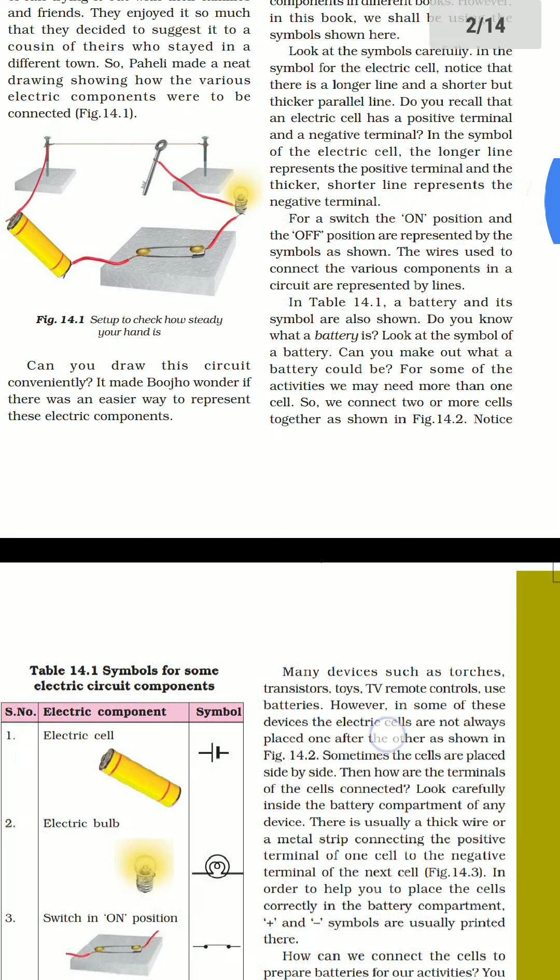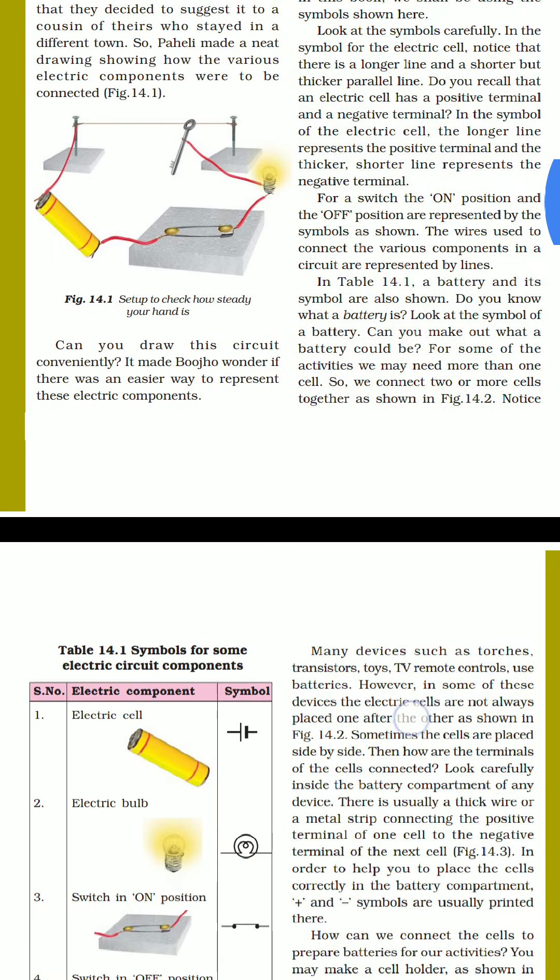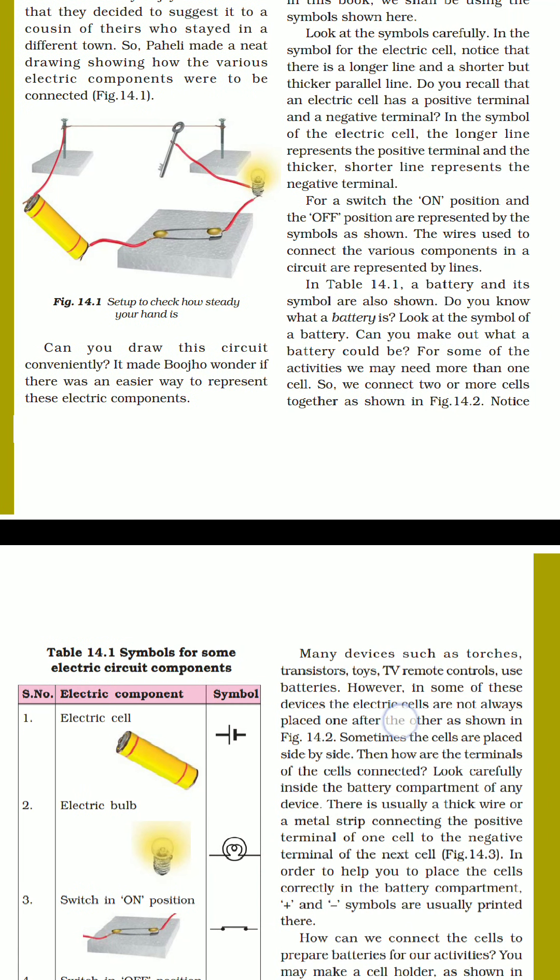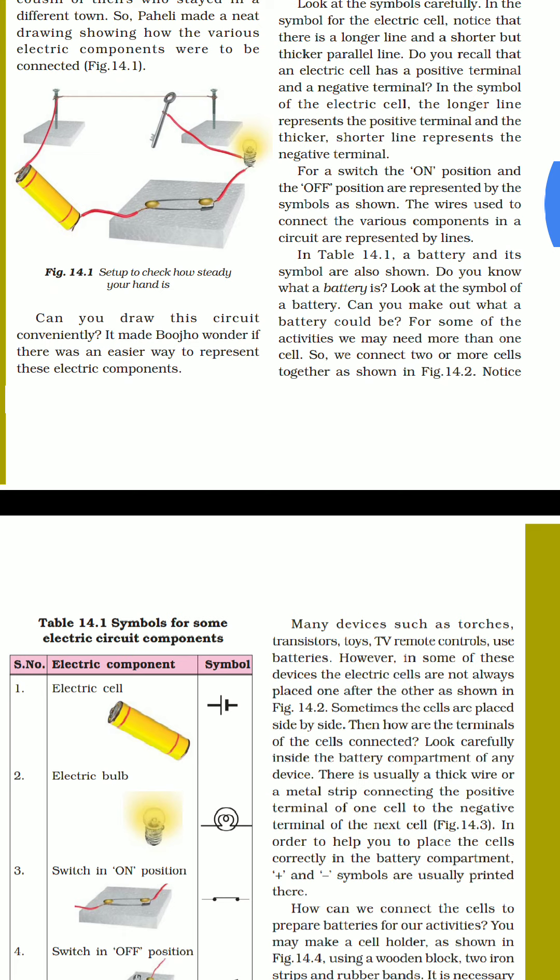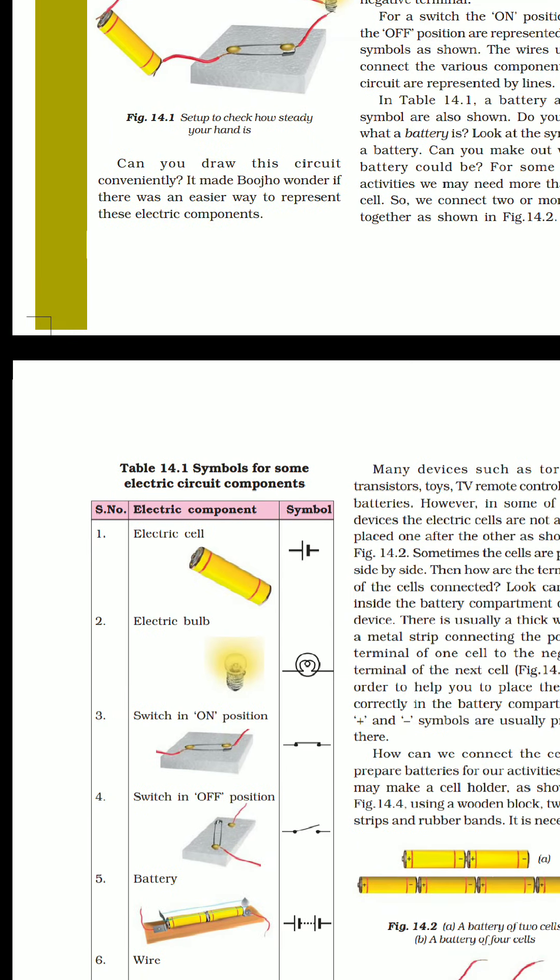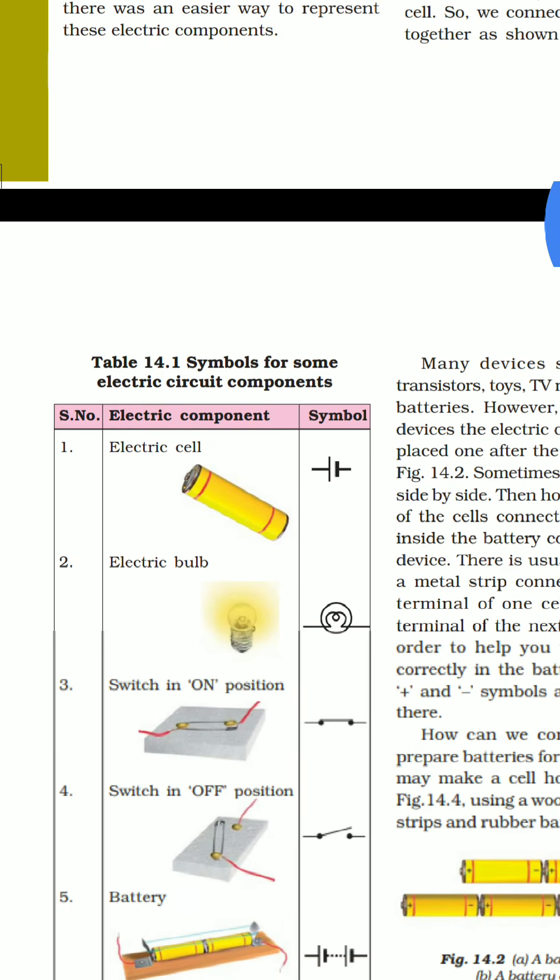If you remember, if you had read the cell, there is a positive terminal and a negative terminal. So in the electric cell, the longer line will represent the positive terminal and the shortest line will represent the negative terminal. Like here, see here, there is an electric cell. Here what is given is a long line and a small line. Long line is positive and small line is negative.